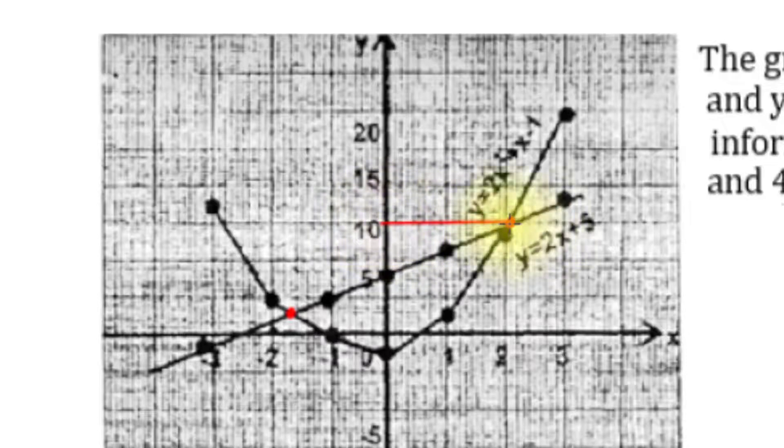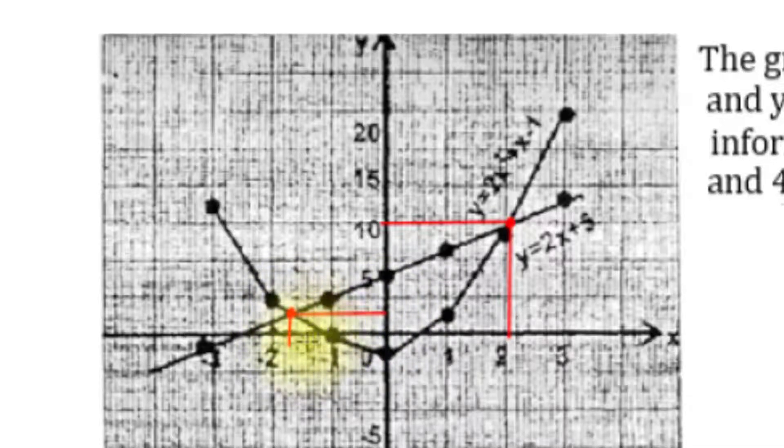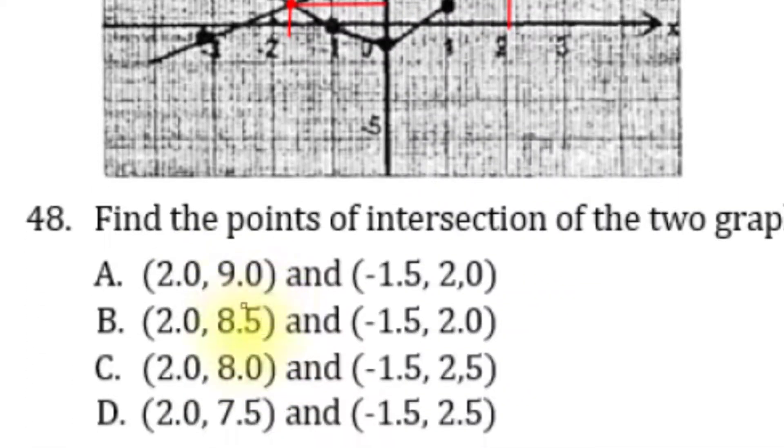We can trace from the intersection points: from one point we move to the left to read the x-axis value as one solution, and from the other point we move to the y-axis and x-axis to read the other solution. However, I'm having quite a difficult time reading these points accurately — for example, in this right-hand corner I'm reading 10, but that's not matching the options.